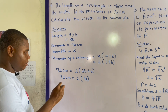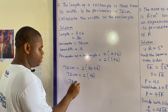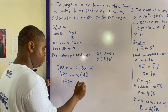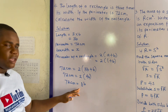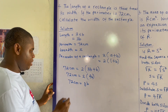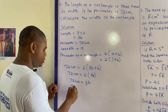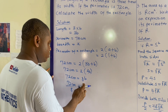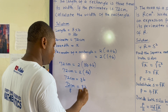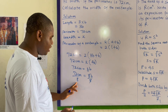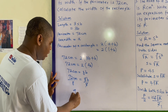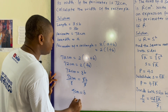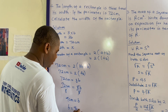Dividing both sides by 8: 72 centimeters divided by 8 equals 8b over 8. So 72 divided by 8 gives 9 centimeters. Therefore the breadth b is 9 centimeters.